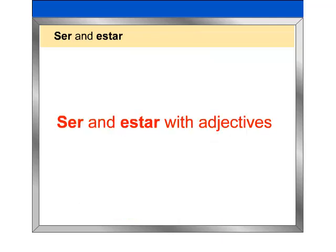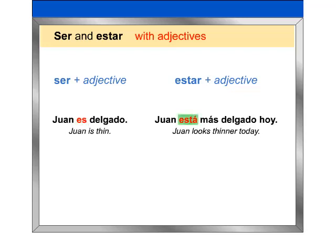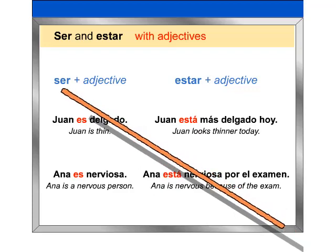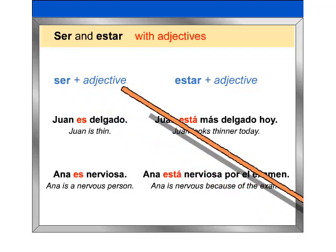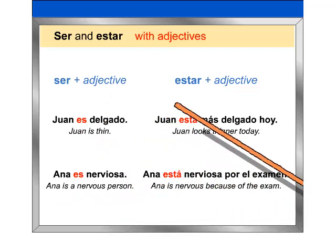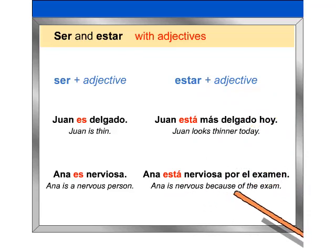Ser and estar with adjectives. With many descriptive adjectives, ser and estar can both be used, but the meaning will change. Juan es delgado. Juan está más delgado hoy. Ana es nerviosa. Ana está nerviosa por el examen. The statements with ser are general observations about the inherent qualities of Juan and Ana — he is thin, she is a nervous person. The statements with estar describe conditions that are variable: Juan looks thinner today; Ana is nervous because of the exam.